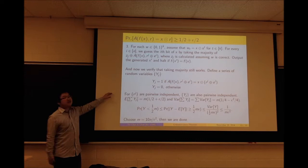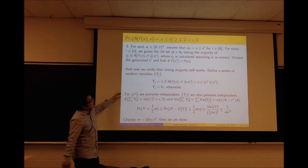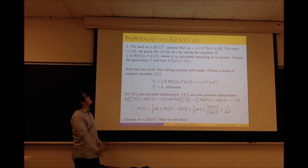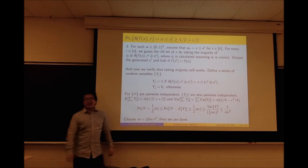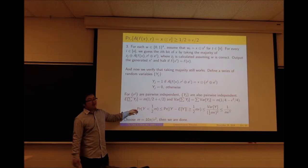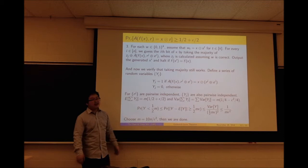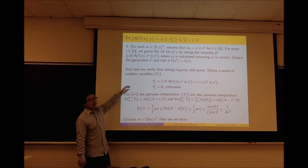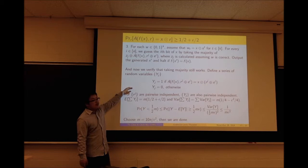For the search step, we enumerate all possible answers w for x dot s_t. For every w, we assume it is correct, and then take the majority of z_j XOR z_j′ to generate each bit of x. Here z_j is calculated from w accordingly, and z_j′ = A(f(x), r_j XOR e_i). For every w, we generate x′ and verify it by checking f(x′). If f(x′) equals f(x), we output x′; otherwise, we move to the next w.